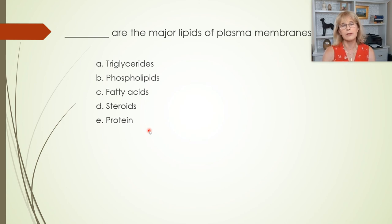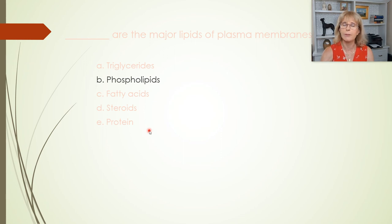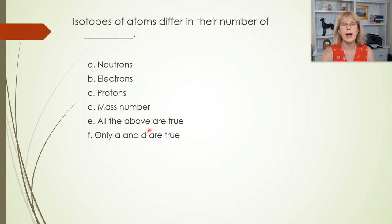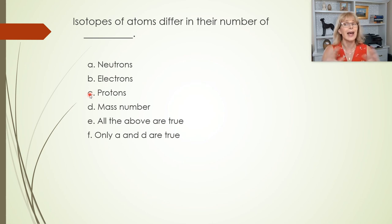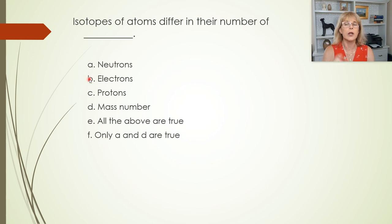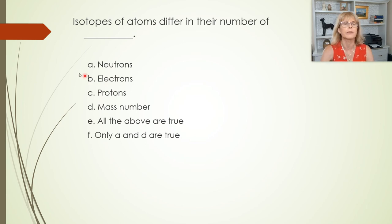What are the major lipids of plasma membranes? We just talked about it — those are the phospholipids. Isotopes of atoms differ in their number of what? They don't differ in their number of protons, because if they had a different number of protons they'd be different elements. A different number of electrons would be the difference between ions. Different number of neutrons — yes. Isotopes have got different numbers of neutrons.